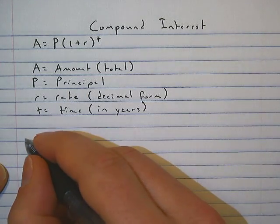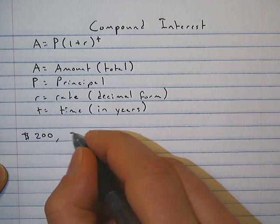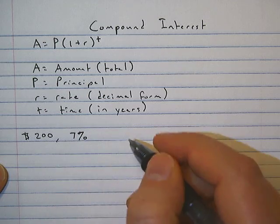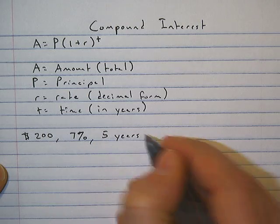So now let's practice. Say we have a $200 deposit that we keep in an account making 7% interest, and we keep it in there for five years.